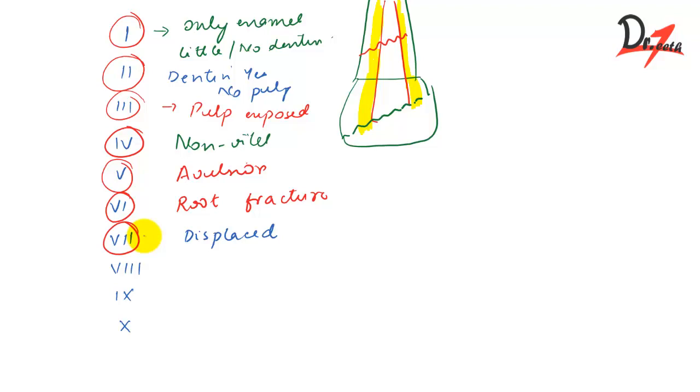In Class 8, we have fracture of the crown in mass and its displacement. What the authors mean by in mass is that the crown is lost in total - the entire crown will be fractured and lost. So in Class 8, we have entire crown fracture and its displacement.